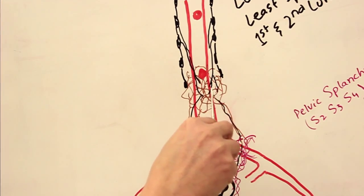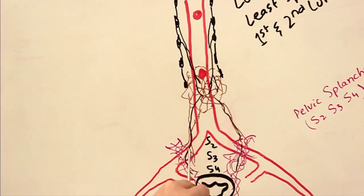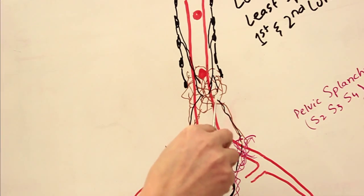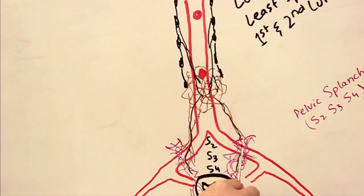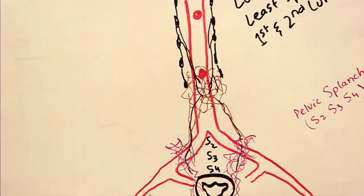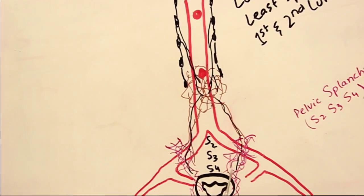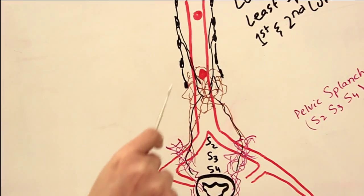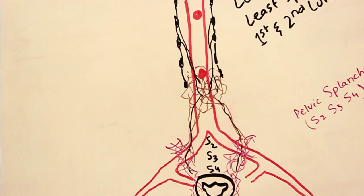The superior hypogastric plexus sends extensions down to the level where the common iliac divides — at the pelvic inlet — forming the inferior hypogastric plexuses on both sides. The inferior hypogastric plexuses receive, in addition to these sympathetic fibers from T11, T12, L1, and L2, fibers of the parasympathetic division.